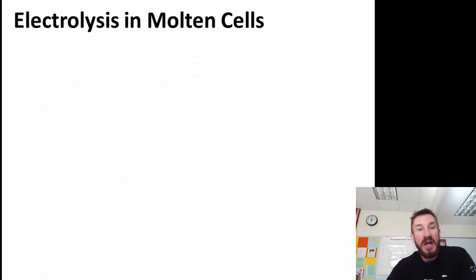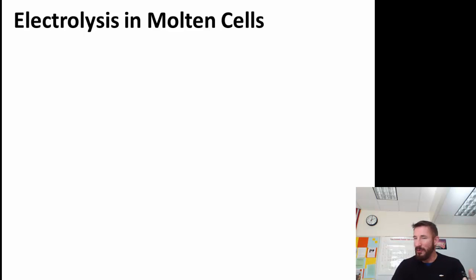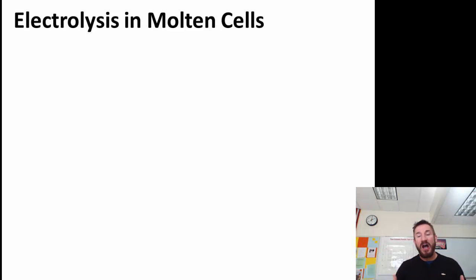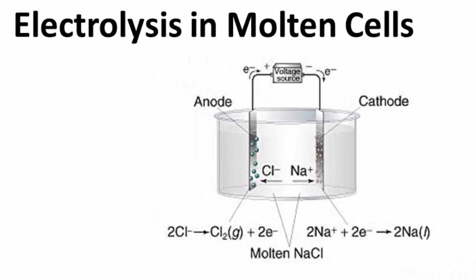An easy way to start with electrolysis is to talk about how it works in a molten cell. Molten means, for a chemist, an ionic compound that's in a liquid state. For example, we're going to look at a molten cell consisting of molten sodium chloride. Molten sodium chloride is very hot because it's at the liquid state. When you have molten sodium chloride, you have sodium ions in liquid state and chloride ions in liquid state. What's nice about this is there's only two things present: sodium ions and chloride ions.